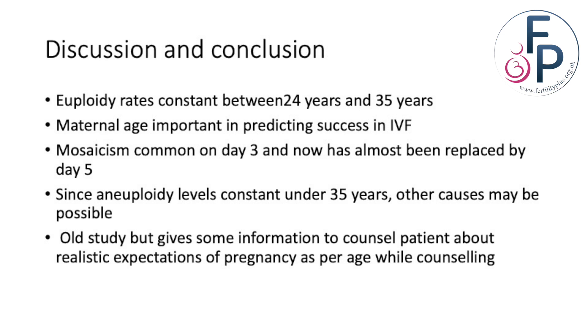So what does this study tell us that we did not know? Not much, but it gets us thinking. The euploid rates remained quite steady between 24 and 35 years, so what is the best test of egg quality? Maternal age. Other tests — AMH, antral follicle count, FSH — are tests of quantity, not quality. FSH tests how the pituitary is responding and may imply quality but is not a direct test of it. Age remains the best factor that tells you about egg quality.